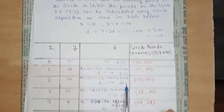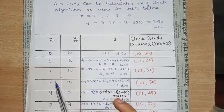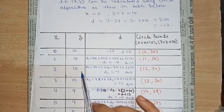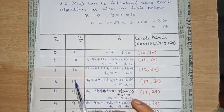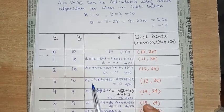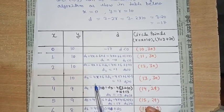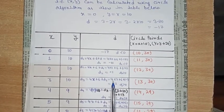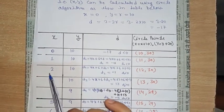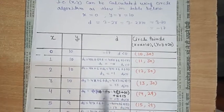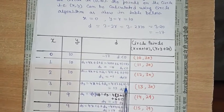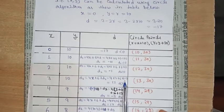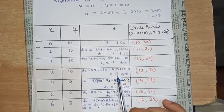d2 = minus 1, which is less than 0. Again we increment the x-axis: 2 becomes 3. The y-axis remains 10. And d3 = 4x + 6 + d2 = 4 into 2 (previous x) + 6 + (minus 1), which calculates to 13.